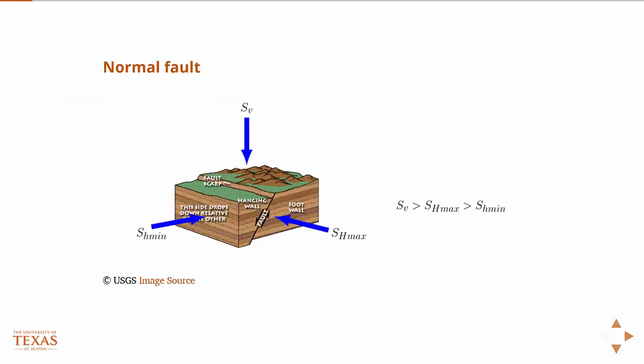So the first one we talked about is the normal fault. And you remember, how do we characterize the normal fault? And it's normal to what? The motion of the hanging wall is normal to what? Gravity, right? So in this case, the vertical stress is greater than the two horizontal stresses to accommodate that motion.